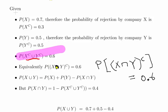Now that means that the complement of the intersection of X and Y is 0.6, the probability of that. Constructively that means that the probability of the intersection of X and Y is 0.4, and we're going to use that later on.